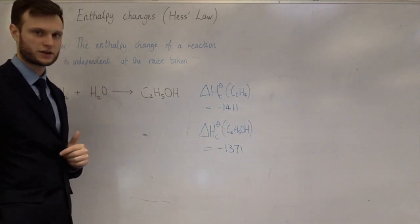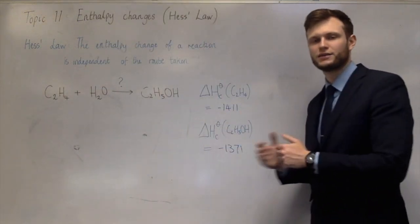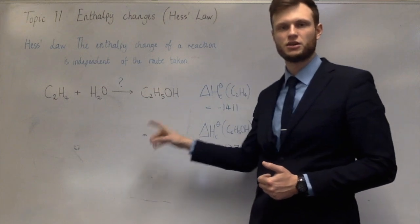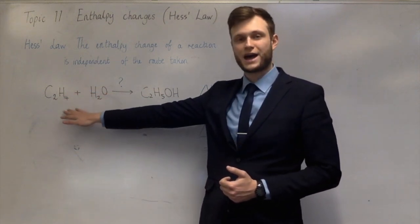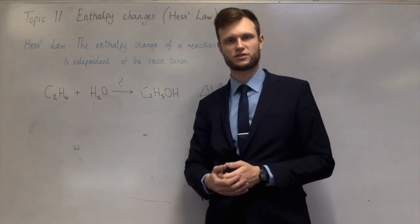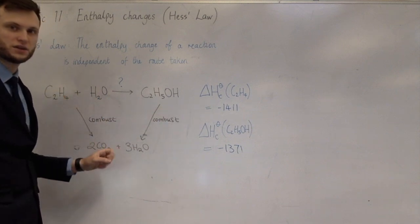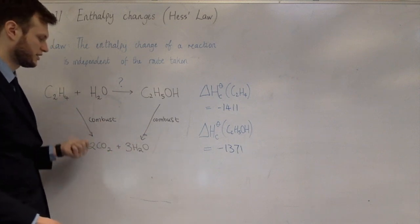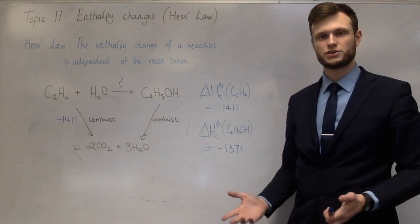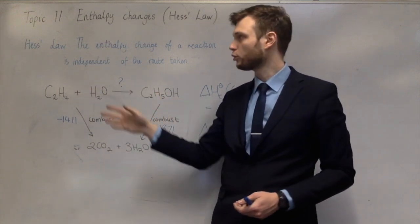The way you do that is to burn everything on the left-hand side and burn everything on the right-hand side, and put in these data to show what those enthalpy changes would be. If we burn both sides, we get the same products, because the atoms on one side have to be the same as the atoms on the other side. If we completely combust the same atoms, we get the same products — 2CO₂ and 3H₂O. Now I need to put in the numbers corresponding to these changes on the arrows. This is the enthalpy change of combustion of ethene, so I'll put in minus 1411. And Hess's law says it doesn't matter which way we go — that change is always the same.